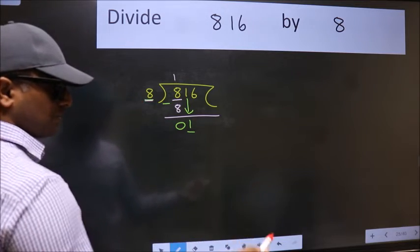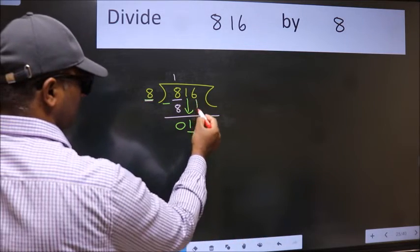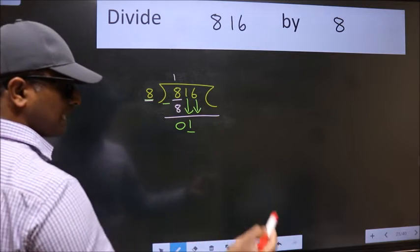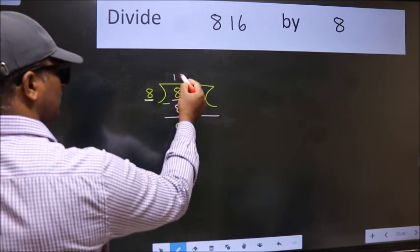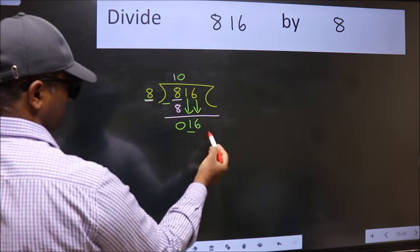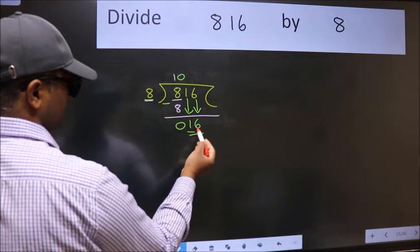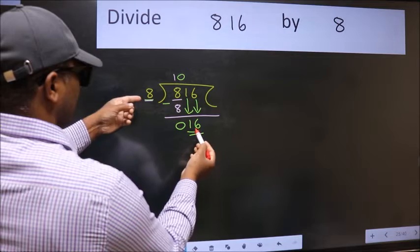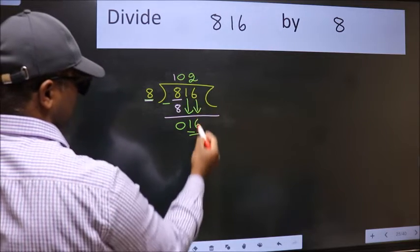So, we should bring down the second number. And the rule to bring down the second number is put 0 here. Then only we can bring this number down. So, 16. When do we get 16 in 8 table? 8 times 2 is 16.